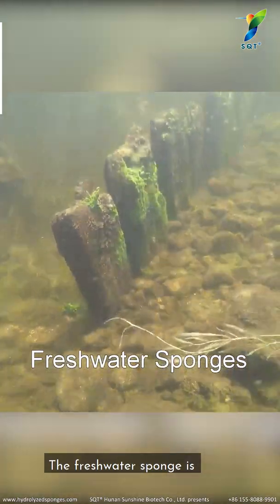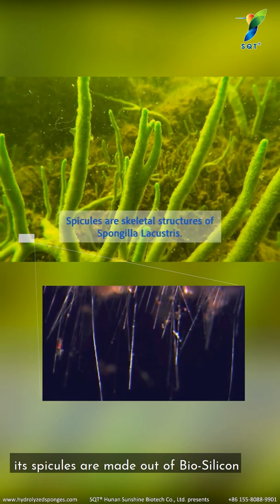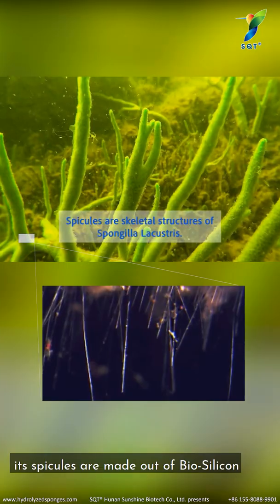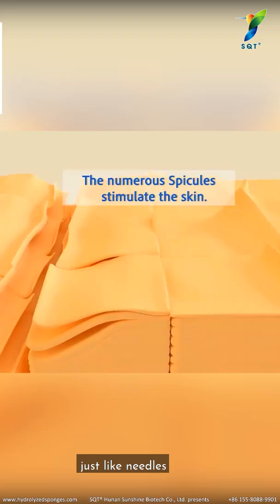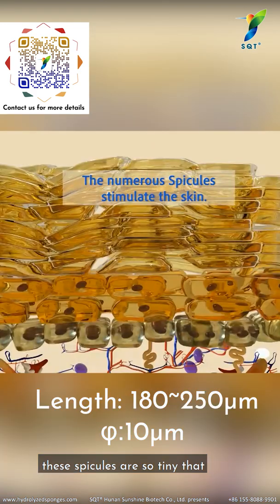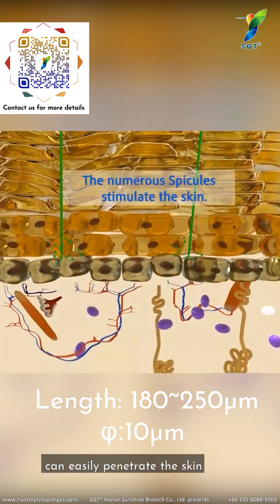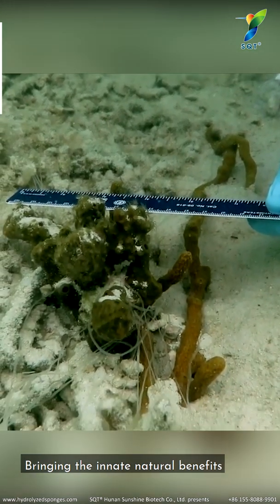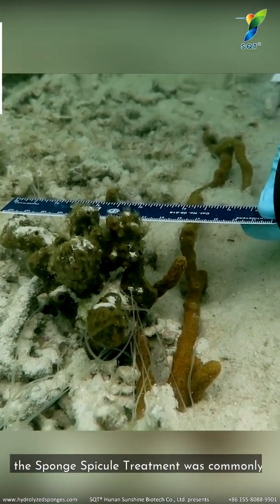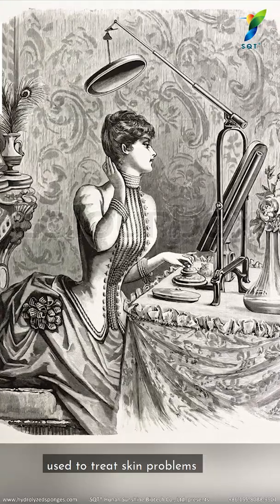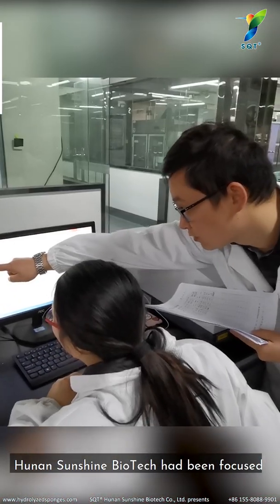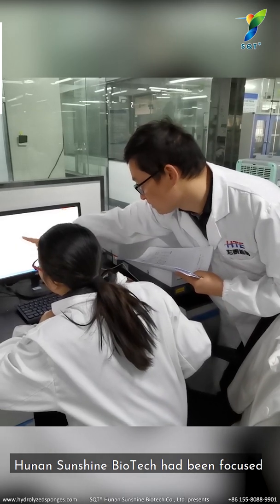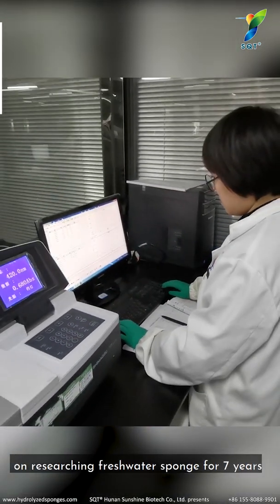The freshwater sponge is one genus of the sponge family. Its speckles are made of biosilicon, formed into simple cylinders with pointed ends just like needles. These speckles are so tiny they can easily penetrate the skin. Bringing innate natural benefits, speckle treatment was commonly used to treat skin problems from 18th century Europe. Hunan Sunshine Biotech has been focused on researching freshwater sponges for seven years.